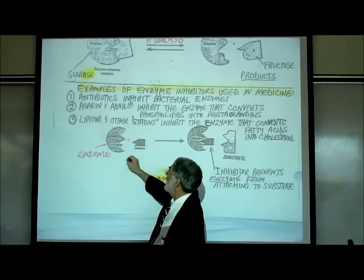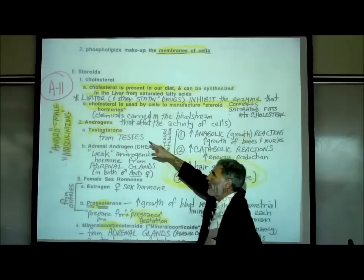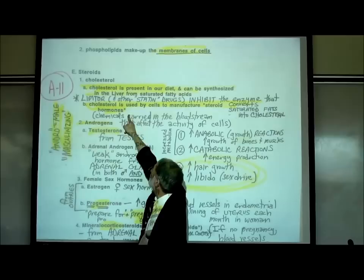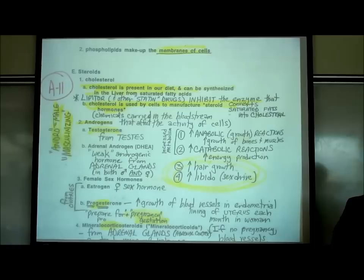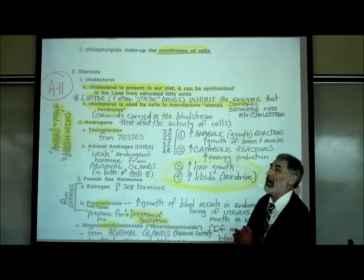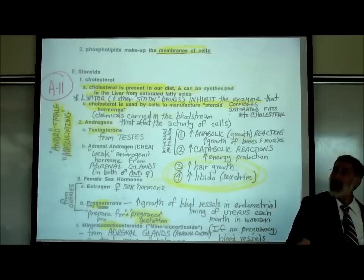A third example: Lipitor and other statins inhibit the enzyme that converts fatty acids into cholesterol. It inhibits an enzyme in your liver cells that converts saturated fats into cholesterol, thereby reducing the total amount of cholesterol formed in your body. The key point for future nurses, physician assistants, and pharmacists is that many, many drugs are, in fact, enzyme inhibitors — that's how they work.